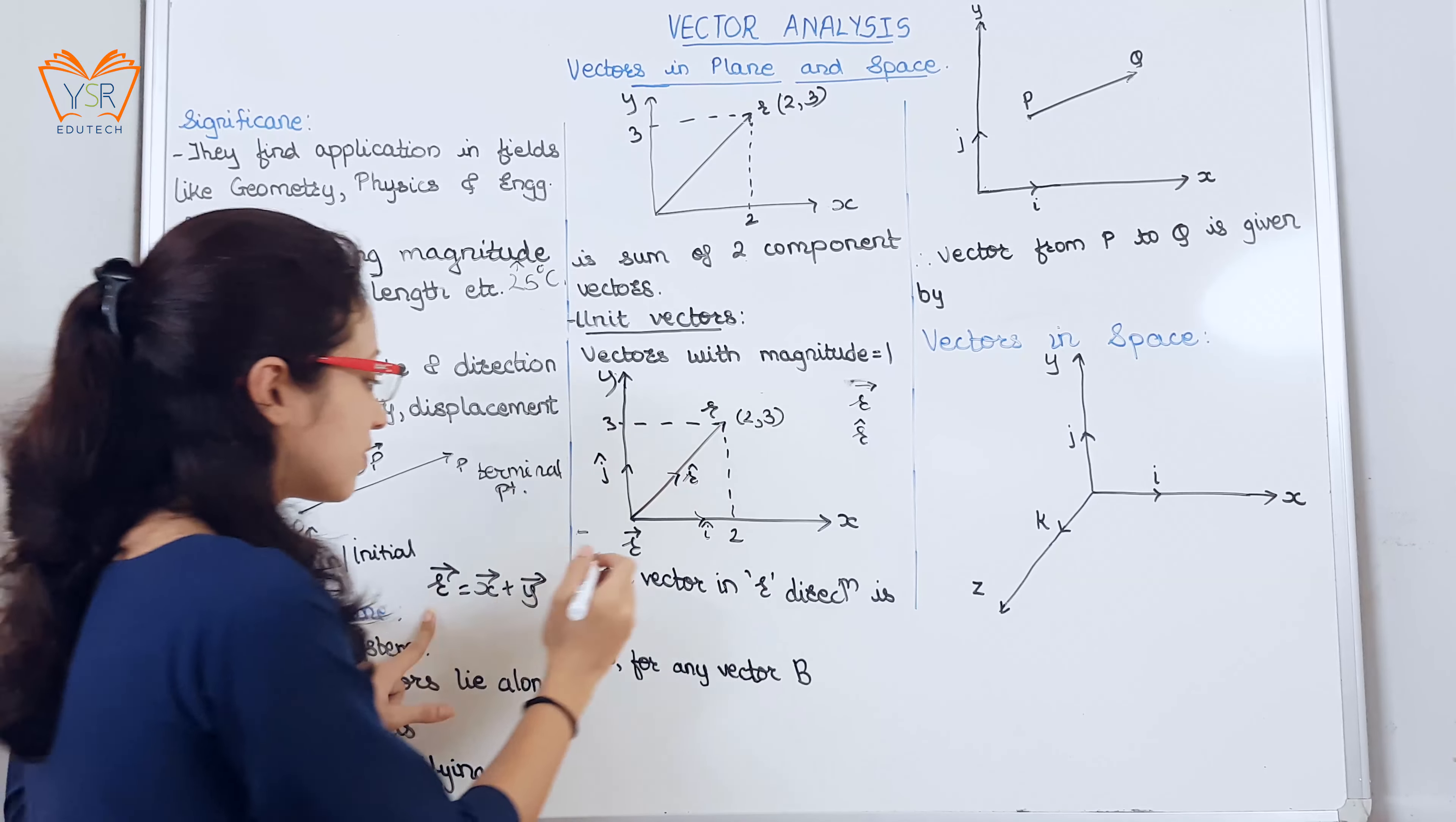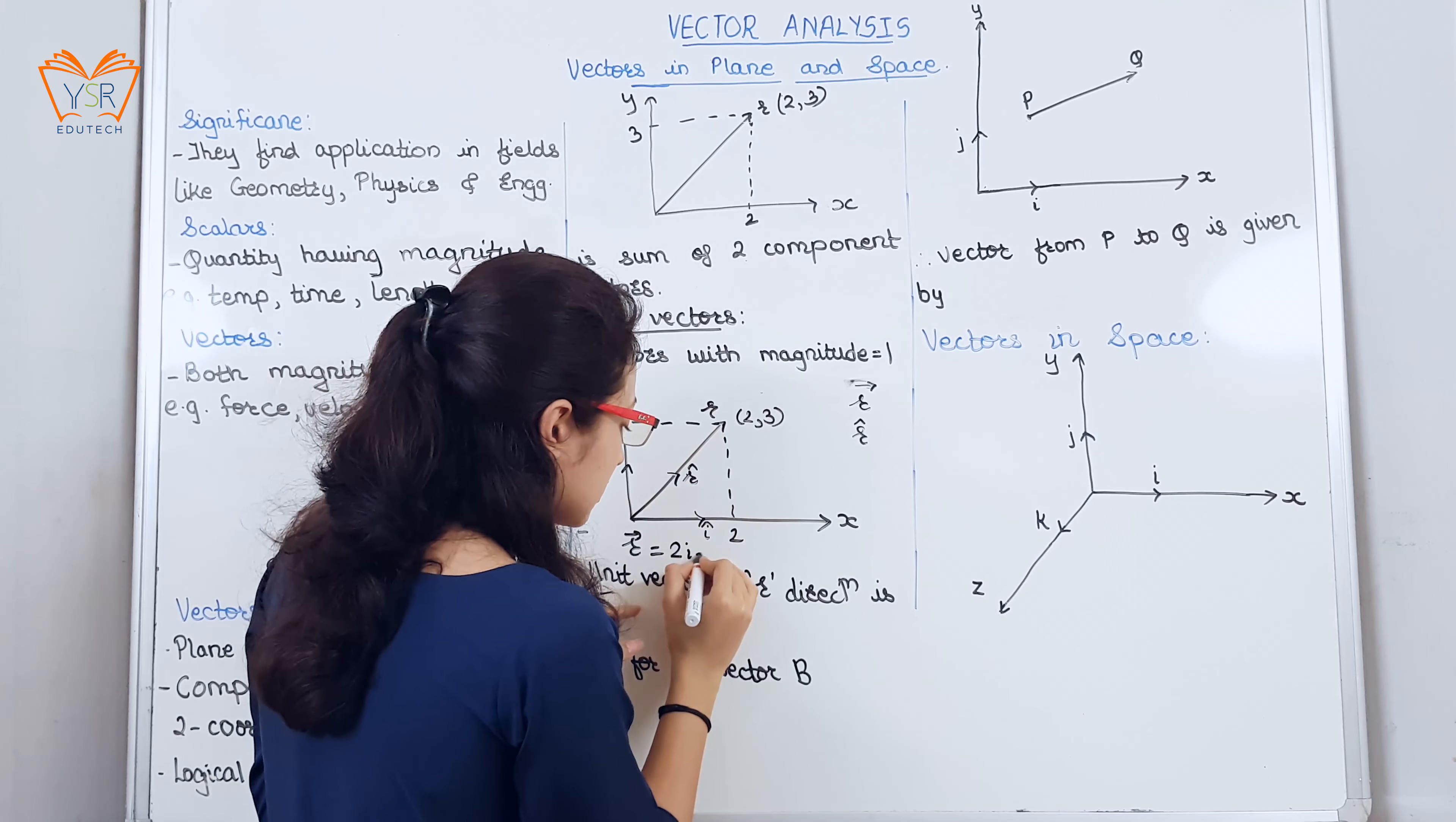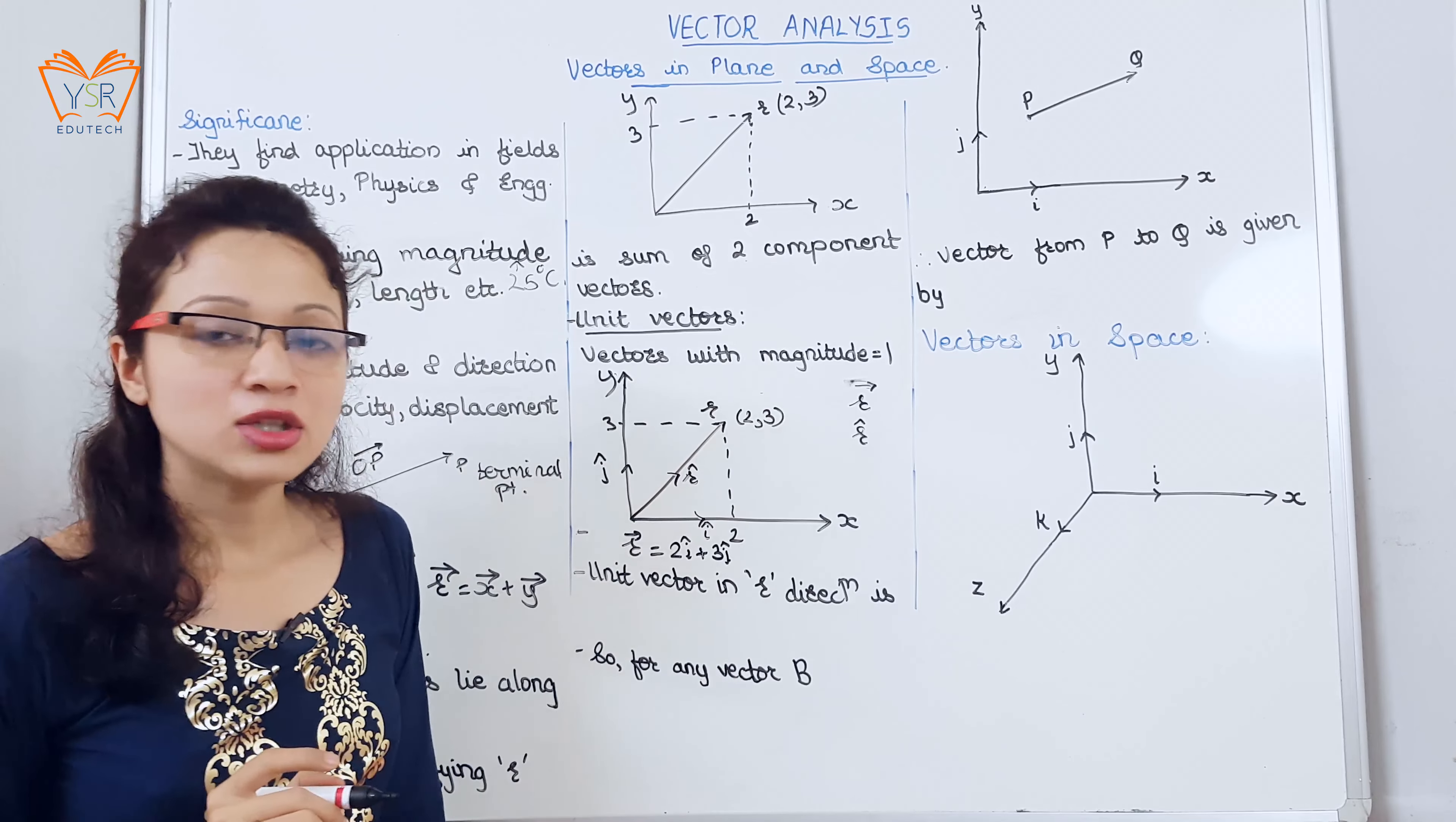So according to this formula we can write r vector is equal to 2i along the x axis plus 3j. Here the 2 and 3 are the magnitudes, i cap and j cap are the unit vectors.